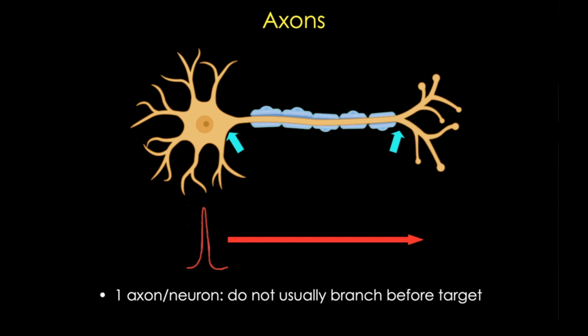Larger diameter axons are myelinated by glial cells. You can think of this as a sort of insulation that increases the speed of the conduction of action potential. The axoplasm, or cytoplasm of the axon, has tons of microtubules and neurofilaments, and all are produced in the cell body.